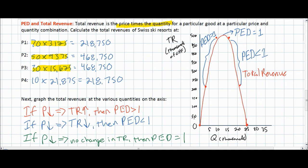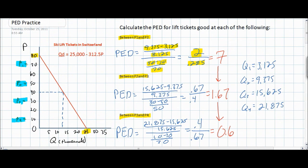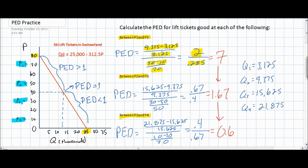The total revenue test can be used to determine whether demand is elastic, inelastic, or unit elastic without actually having to calculate PED coefficients. Looking back at our original demand curve, we can conclude that anywhere between 80 francs and approximately 40 francs demand for ski lift tickets is elastic, because as price fell from 80 to 40 francs total revenues actually increased. Below 40 francs, further decreases in price led to decreases in total revenue, so PED must be less than one. Somewhere around 40 francs, total revenue did not change when price changed, so PED must be equal to or nearly equal to one.